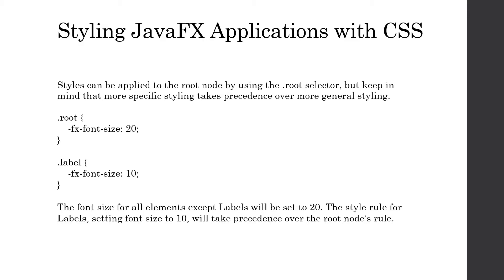Continuing on with using CSS in JavaFX applications, the next thing I want to talk about is a couple of the different kinds of selectors we can use. So far I've touched on being able to use selectors that allow you to select a particular control in your JavaFX application — something like a label, a button, a text field, or things like radio buttons and sliders. But there are other types of selectors you can use besides those.